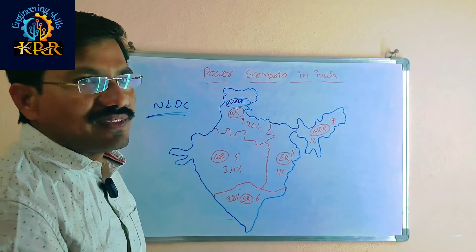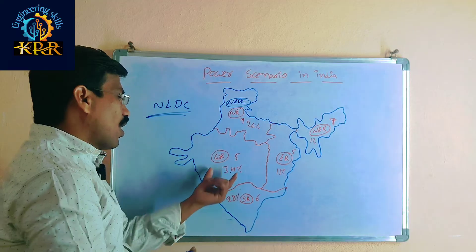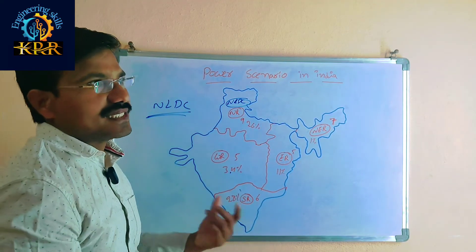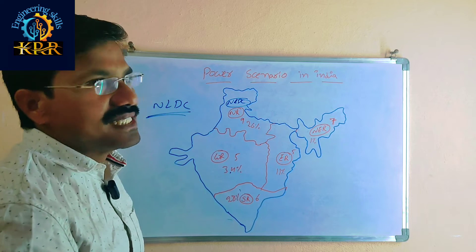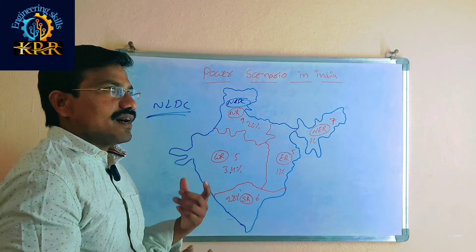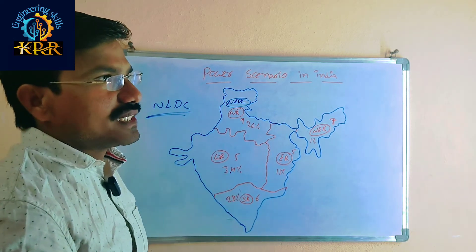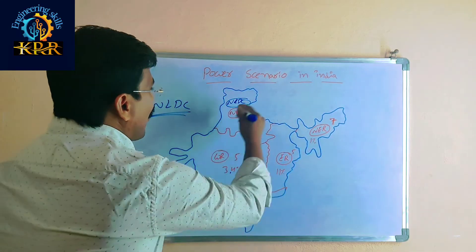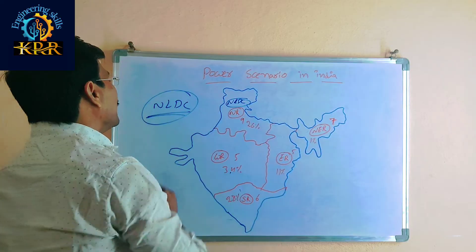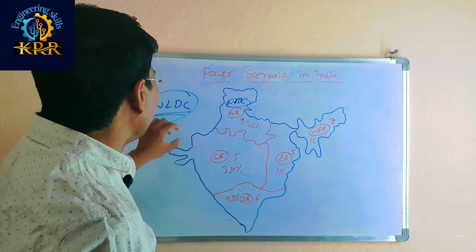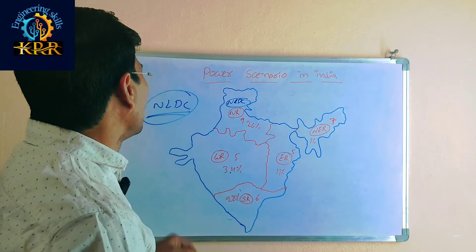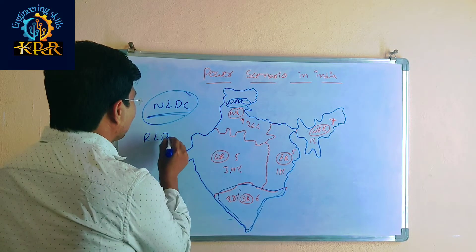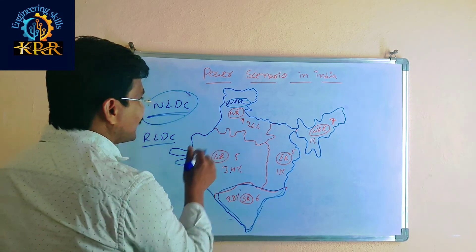When transmitting power from one region to another, voltage and frequency are matched. Power is transmitted with the help of HVDC or HVAC — High Voltage DC current or High Voltage AC current. All regional coordination takes place through the NLDC — National Load Dispatch Center, available in Delhi.